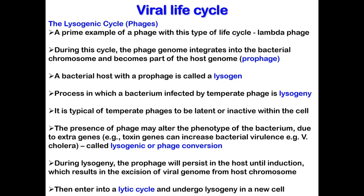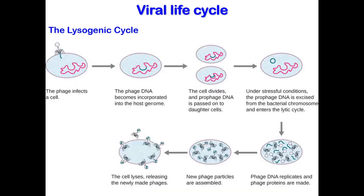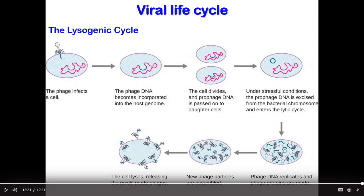In the lysogenic cycle, the phage genome enters the host cell through attachment and penetration. However, instead of killing the host, the phage genome integrates into the bacterial chromosome. As the bacterium replicates its chromosome, it also replicates the phage DNA and passes it on to daughter cells. This can continue for many generations until exposure to stresses such as UV light or changes in growth conditions. Under these stressful conditions, the phage DNA is excised from the bacterial chromosome, the lysogenic cycle ends, and the lytic cycle begins.